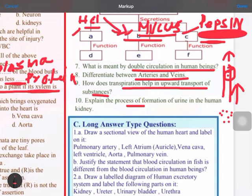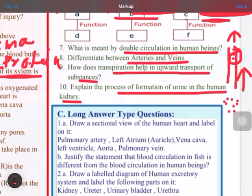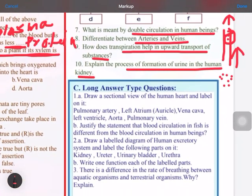Explain the process of urine formation in case of kidney, human kidney. You have to write the functioning of nephron here, complete functioning you can write. Then the long answer questions: draw a sectional view of human heart and label on it. So we have to write a sectional view, that means you have to cut the vertical view, half heart, then you can show all these things in that.